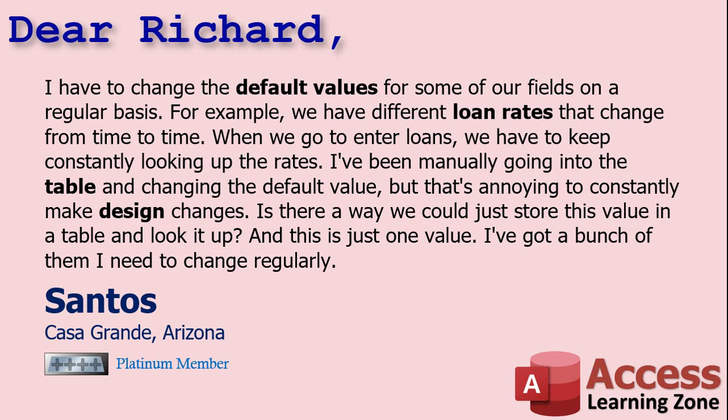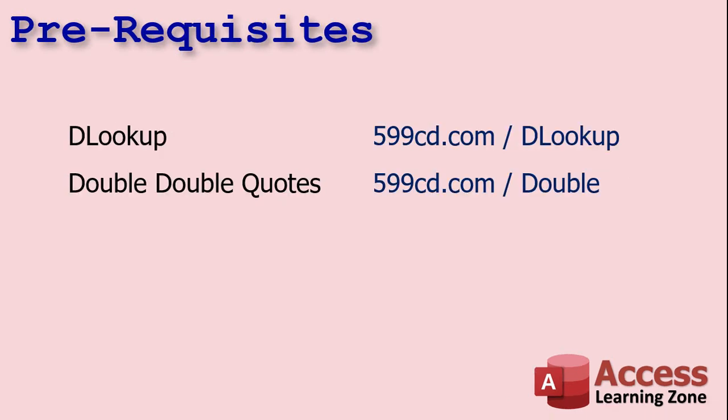Yes Santos, what we can do is create what's called a system defaults table. It'll be a table with some values in it and we'll use DLookup to pull those in as default values for the records in your database. Prerequisite: go watch my DLookup video if you haven't already, since this entire video is based on DLookup. Also watch the double-double-quotes video where I show you how to use double-double-quotes inside of quotes.